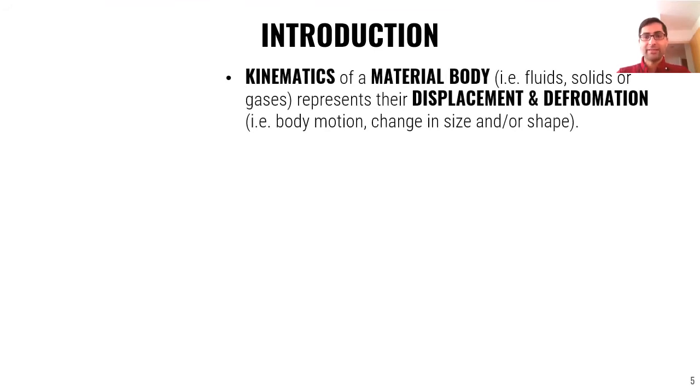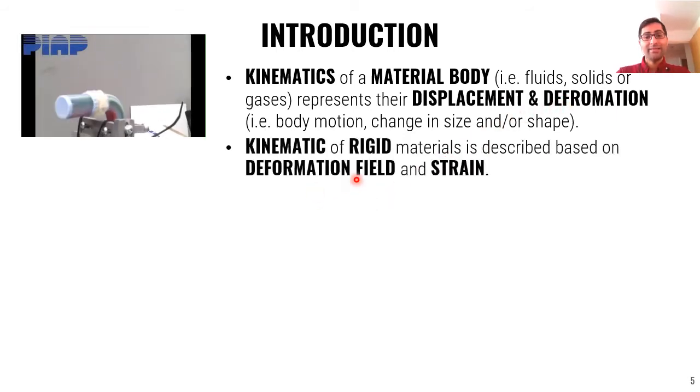Kinematics of a material body, for example, fluid or solid or gas, represents their displacement and deformation. Kinematics of rigid material is described based on deformation field and strain. You see, for example, our robot is deforming here. And as a result, we get strains propagated through the structure.